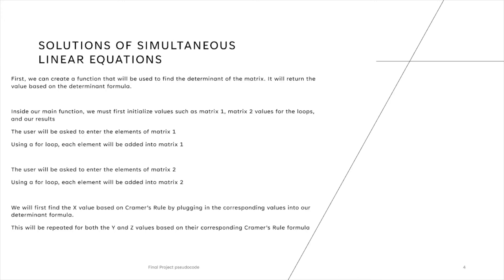The user will then be asked to enter the elements of the second matrix, which is a 1x3. These are the solutions to the three equations with unknown variables. Using a for loop, each element will be added into its corresponding spot in the matrix. To determine the unknown x value, we will find the determinant of a matrix with columns of the solution matrix, the y variables, and the z variables. To determine the unknown y value, we will find the determinant of a matrix with columns of the x variable, the solution matrix, and the z variables. To determine the unknown z value, we will find the determinant of a matrix with columns of the z variables, the y variables, and the solution matrix.